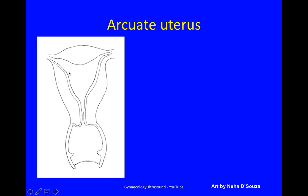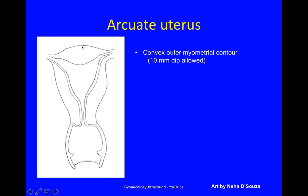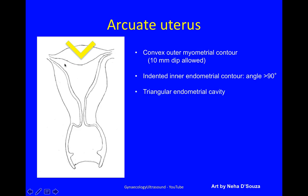This is an arcuate uterus. Again, it has a convex outer myometrial contour with a 10mm dip allowed. An indented inner endometrial contour with an angle of more than 90 degrees — you can clearly see this is more than 90 degrees. A vaguely triangular endometrial cavity, and two interstitial portions of the fallopian tube.